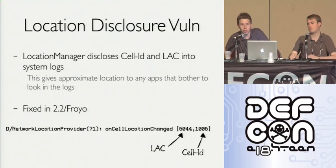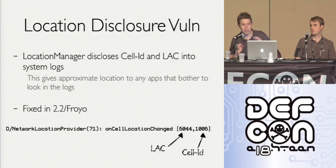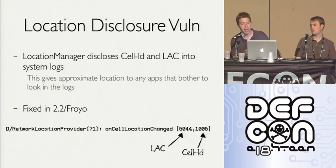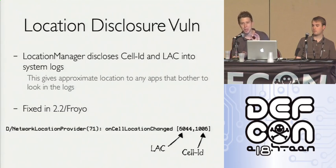There is a vulnerability in Android where the location manager service — the service that the Android system uses to provide your GPS location via cell tower, Wi-Fi, and so forth — when you retrieved the location, the location manager service dumped your LAC and cell ID, which are the two GSM identifiers that can be used to determine where you are, into the logs. Any application that has the read logs permission can grab those pieces of data and determine where your device is.